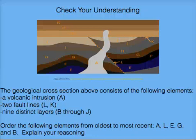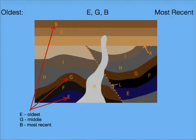The following slideshow will take you through the analysis of the geologic cross-section. When looking at a geologic sample, we know that the layers at the bottom are always the oldest. The layers from oldest to most recent are as follows: E, G, and lastly B.